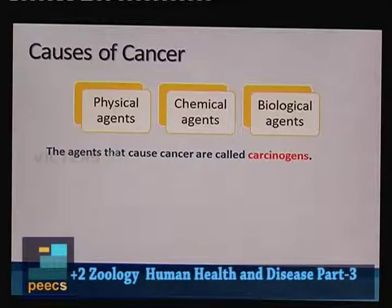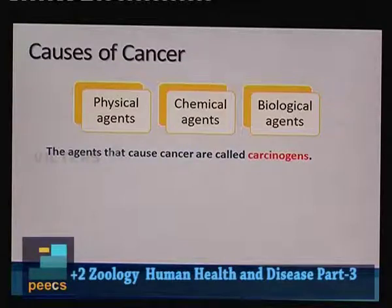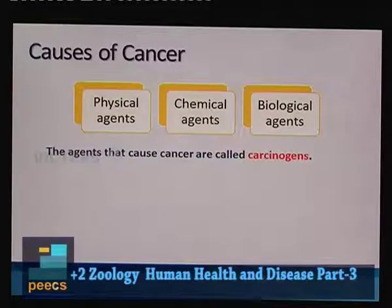Cancer is caused by different factors. Physical agents such as X-rays, UV rays, and gamma rays are ionizing radiations that can damage DNA, causing mutations that lead to cancerous conditions. Some chemicals in tobacco smoke are carcinogenic. Biological agents also cause cancer — some viruses carry specialized genes called oncogenes that can cause cancer.